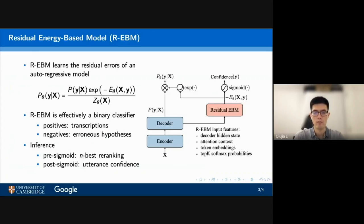In inference, the pre-sigmoid value -E_θ(data) is combined with the log-likelihood P(y|x) to re-rank N-best hypotheses. And the post-sigmoid value is the corresponding confidence score of the given utterance between 0 and 1.